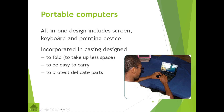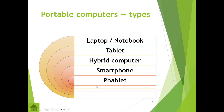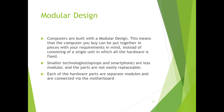Our portable computers have an all-in-one design where everything is incorporated in the case. They're designed to fold, to be easy to carry, and to protect the various parts. We've covered the different types of portable computers in Grade 11. Importantly, desktop computers are built with what we call a modular design. This means the computer can be put together in pieces with your requirements in mind, rather than consisting of a single fixed unit. Smaller technologies like laptops and smartphones are less modular — their parts are not easily replaceable.